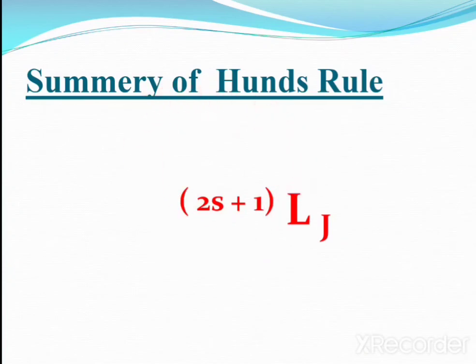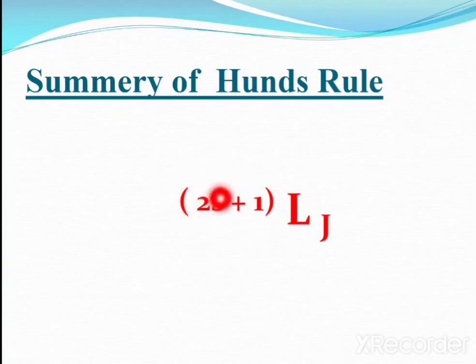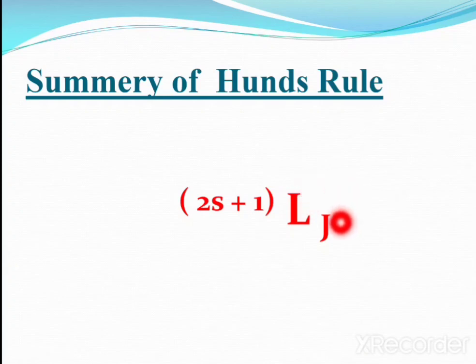A simple trick to remember Hund's Rule: first, focus on spin multiplicity — a higher value of 2S+1 gives the lowest energy. Next, consider the L value — a higher value of L gives the lowest energy. Finally, consider the J value — if the sub-shell is less than half-filled, J = L − S gives lowest energy; if more than half-filled, J = L + S gives lowest energy.